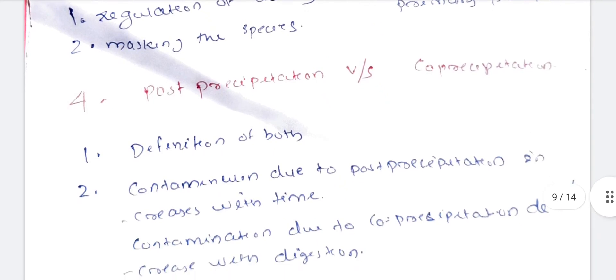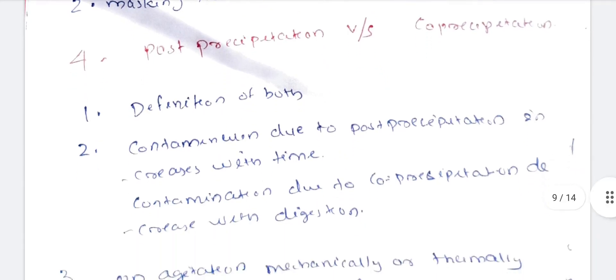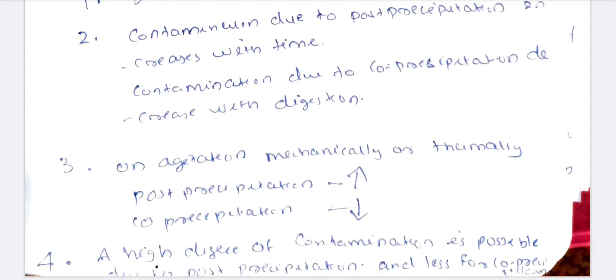Comparison of post-precipitation and co-precipitation: contamination due to post-precipitation increases with time, whereas co-precipitation means contamination occurring along with the precipitate. Digestion reduces co-precipitation but increases post-precipitation. Agitation — mechanical or thermal — affects both. A high degree of contamination is possible due to post-precipitation, and less so for co-precipitation.